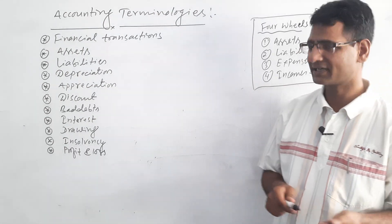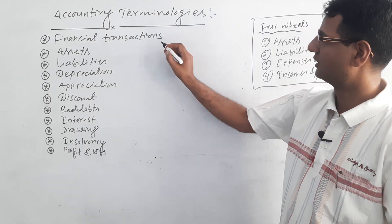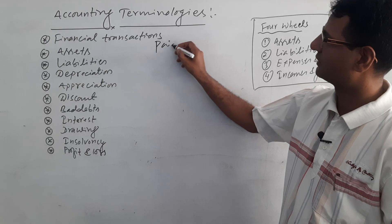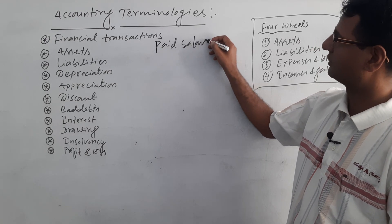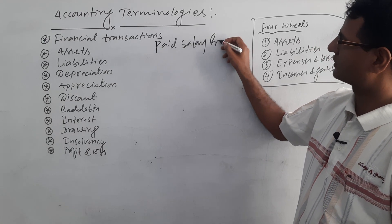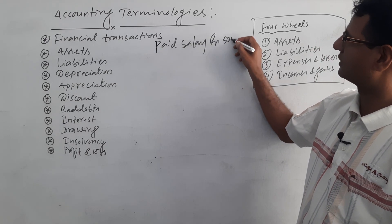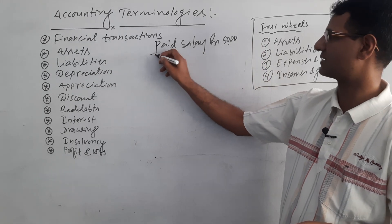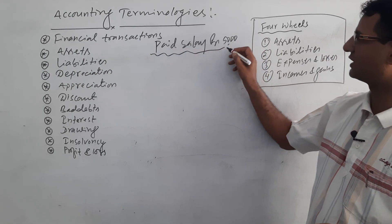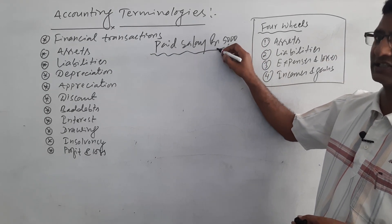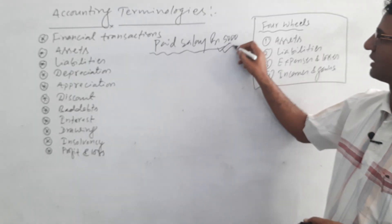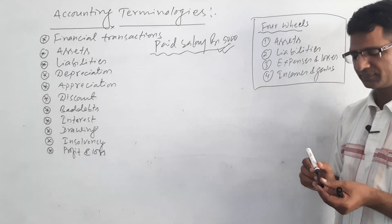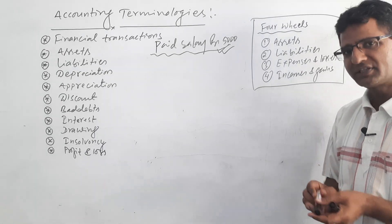For example, paid salary rupees 5,000 — it is a financial transaction because it is measured in terms of money, rupees 5,000.